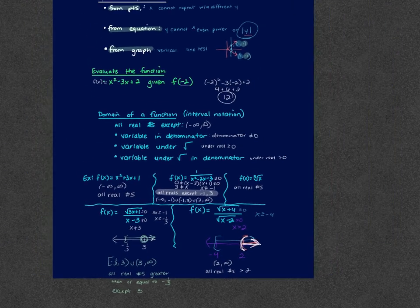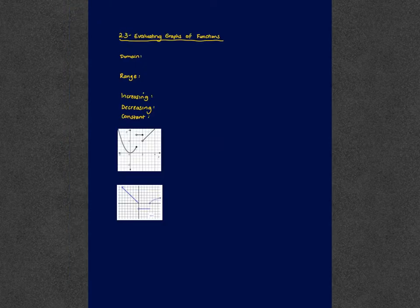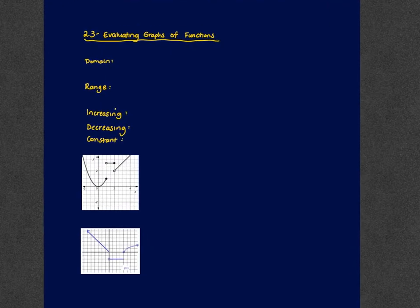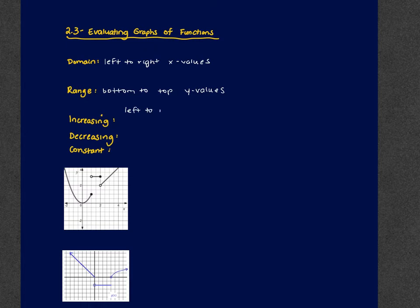That wraps up 2.2. Then we got into 2.3, evaluating the graphs of functions. This is where we did domain and range, and increasing, decreasing, and constant behavior. Remember: domain goes left to right — these are the x values. Range goes bottom to top — these are the y values. Increasing, decreasing, and constant are all read left to right using the x values.